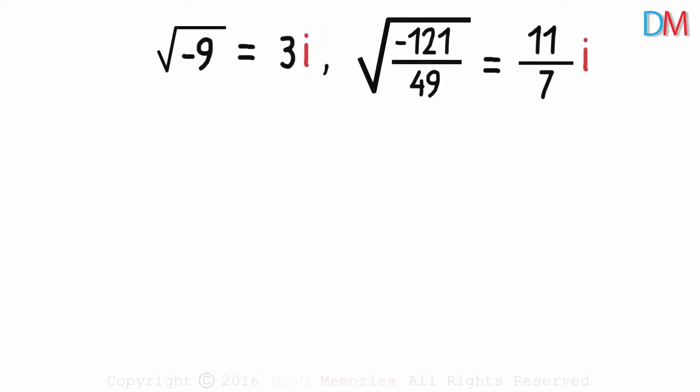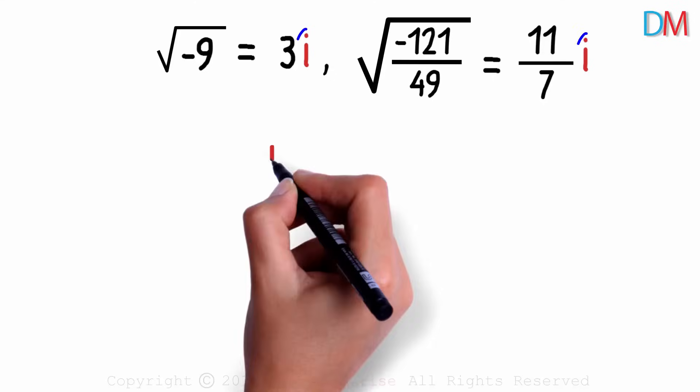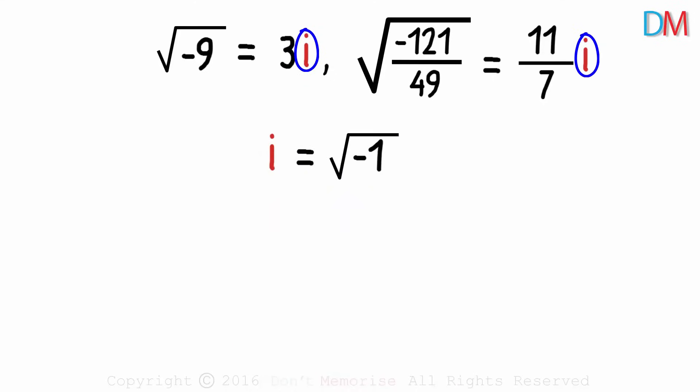In the previous videos, we learned that it is possible to have the square root of a negative number, but it involved using a new number i which is equal to the square root of negative 1.